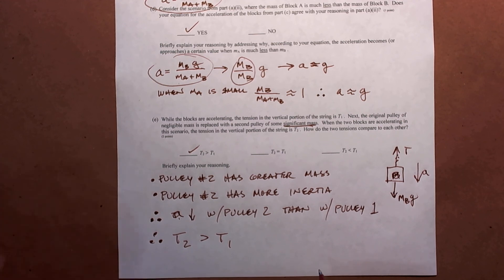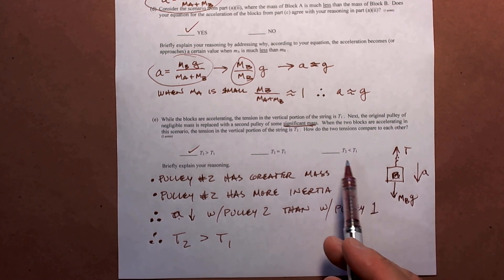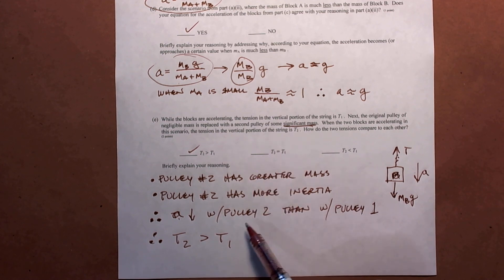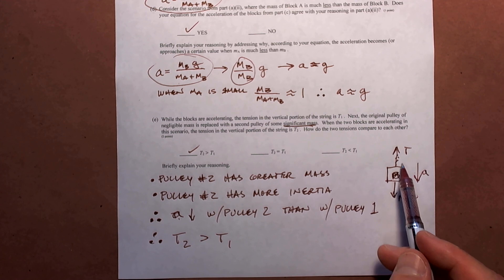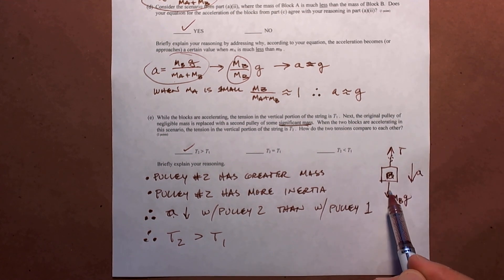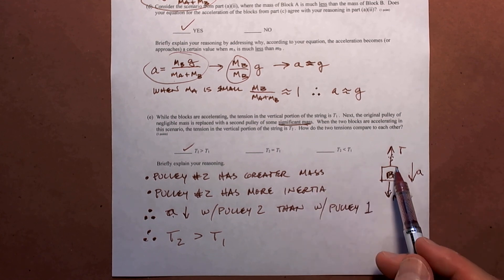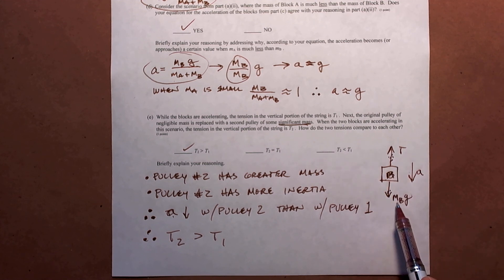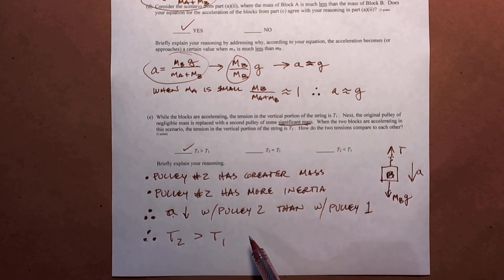That's kind of a hard question to think about unless you really diagram the situation and think about the forces involved. Basically, the massive pulley takes more force to accelerate, so there's less acceleration — meaning the tension is closer to the weight than when there was a massless pulley. Another way to look at it is energy: as block B loses potential energy and gains kinetic energy, some of that energy has to go into not only moving block A on the table, but also spinning that significant-mass pulley.